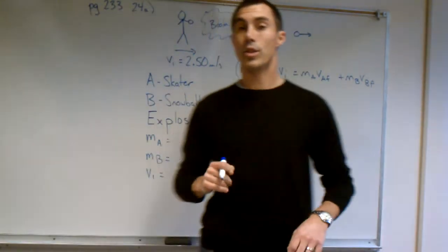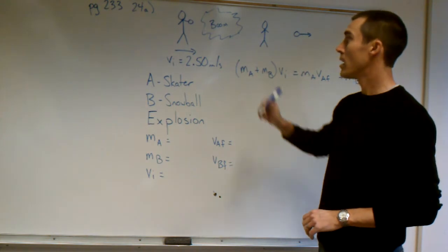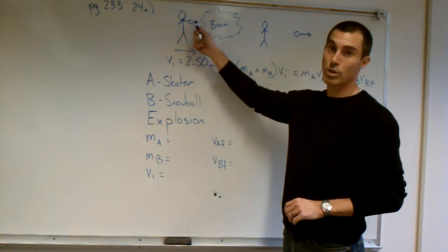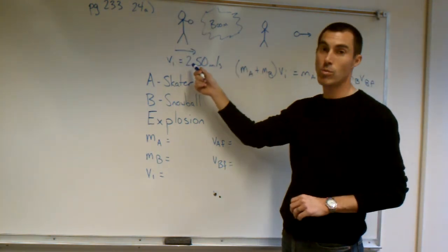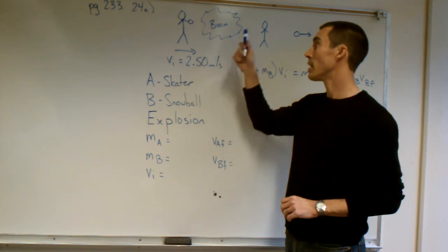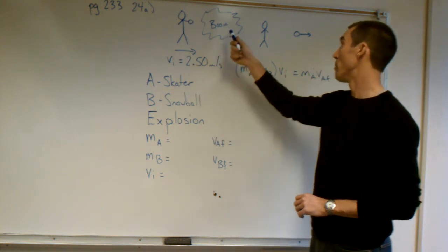Alright, we're going to page 233, number 24A. You have an ice skater holding a snowball, moving to the right at 2.50 meters per second. They throw the snowball, boom,